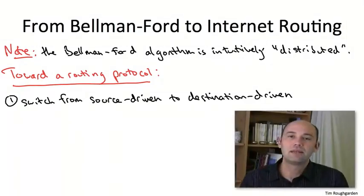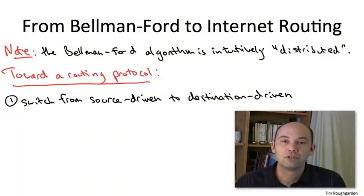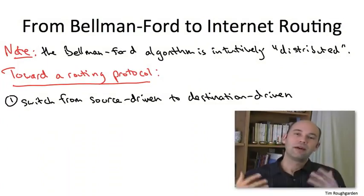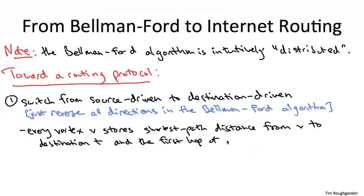All you have to do to accommodate destination driven routing is reverse all of the directions in the Bellman-Ford algorithm. So instead of having a source vertex S out of which you compute all shortest paths, you're going to have a destination vertex T into which you compute shortest paths from all possible origins. Each vertex, rather than storing a predecessor pointer, the final hop on a shortest path from S to that vertex, it's going to store the first hop on a shortest path to the destination T.